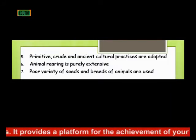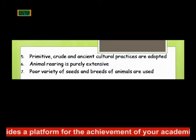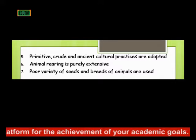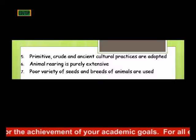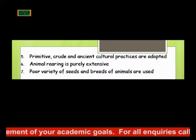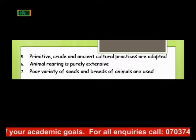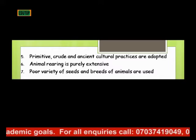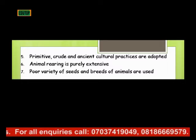One disadvantage of subsistence agriculture is that new developments are not being adopted at subsistence level. Another disadvantage is that animal rearing is purely extensive — that is, the rearing of animals where you leave your animals to roam around and find means of their own existence.